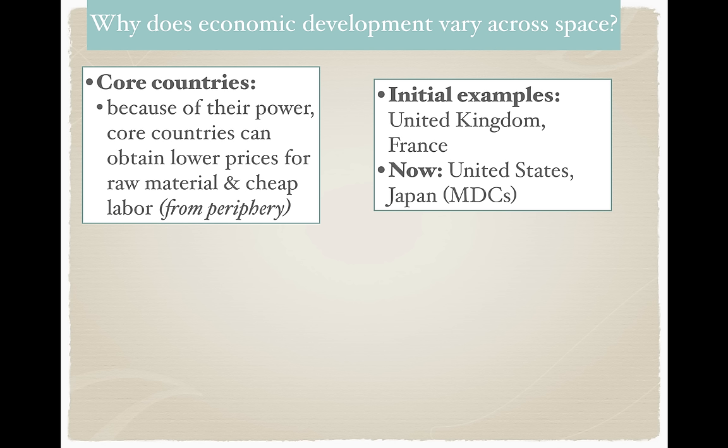Semi-periphery countries experience characteristics of both core and periphery. It could be a core region in decline — think the Rust Belt — or a periphery region undergoing development. Key examples of semi-periphery countries are India, China, and Brazil — key examples of developing nations. China's GDP has certainly expanded tremendously, but we can't forget the concept of regions: there may be core regions of China, but that doesn't mean every single person is experiencing wealth, and it still remains a communist country with many regulations.